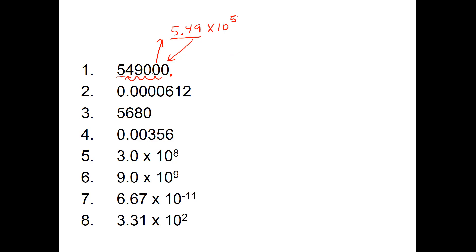That's how to get scientific notation from a bigger number. Now to get scientific notation from a smaller number, like 0.0000612, you're going to do kind of the same thing. You're going to follow it from left to right until you get to the first number, and here we find 6. So we're going to write 6.12 — put the decimal after the first number we see — and now we're going to determine how many zeros we're going to shift it left or right.